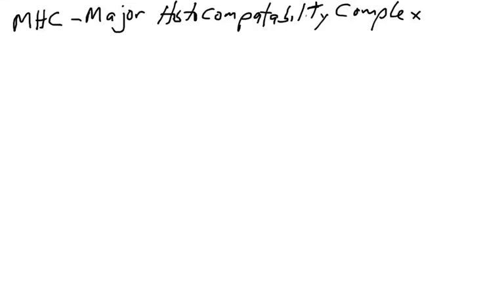Now we're going to talk about the major histocompatibility complex, which is the name for the region of DNA that contains the genes that code for molecules that present antigens. We've been referring to these as MHC class 1 and MHC class 2. The next couple of videos talking about MHC 1 and 2 and the genes that code for them — it's a lot confusing. So we're going to go into detail, and you're going to need a lot of patience when trying to understand MHC diversity.